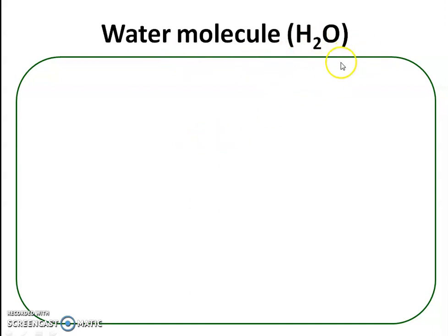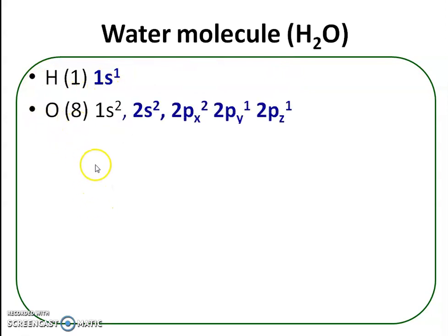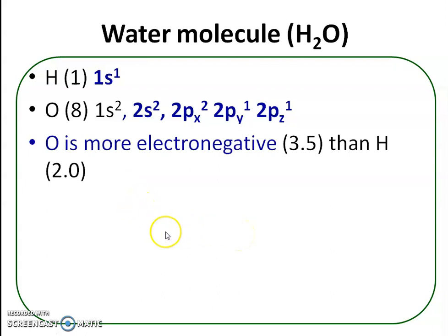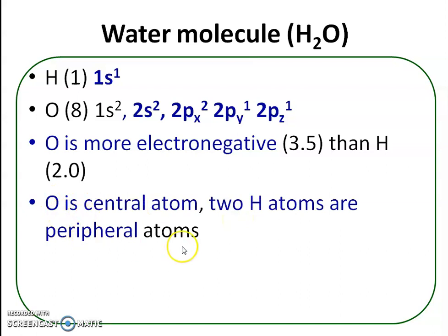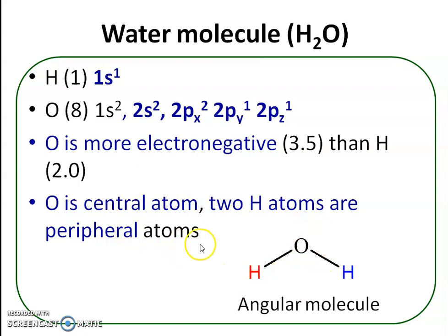In water there are three atoms: one oxygen and two hydrogen. Oxygen atom is the central atom and hydrogen atoms are the peripheral atoms. Hydrogen has configuration 1s¹. Oxygen, atomic number 8, has configuration 1s² 2s² 2px² 2py¹ 2pz¹, meaning in the outermost shell there are six electrons. Oxygen is more electronegative than hydrogen and water is an angular molecule with H–O–H bond angle of 104 degrees 5 minutes.